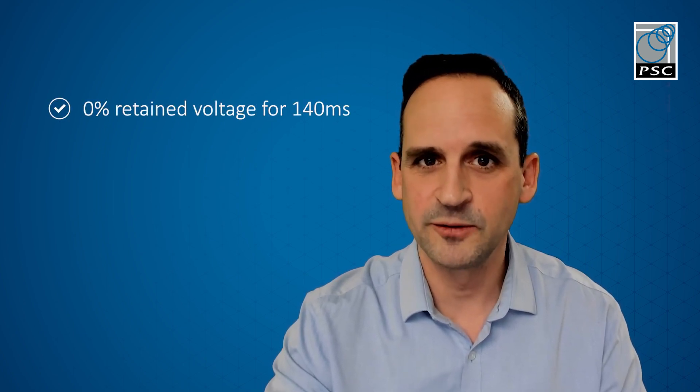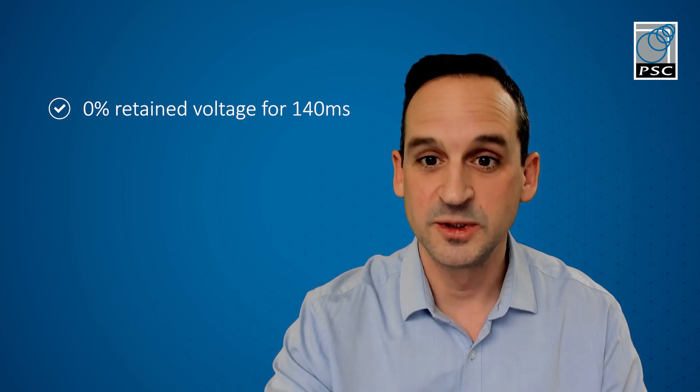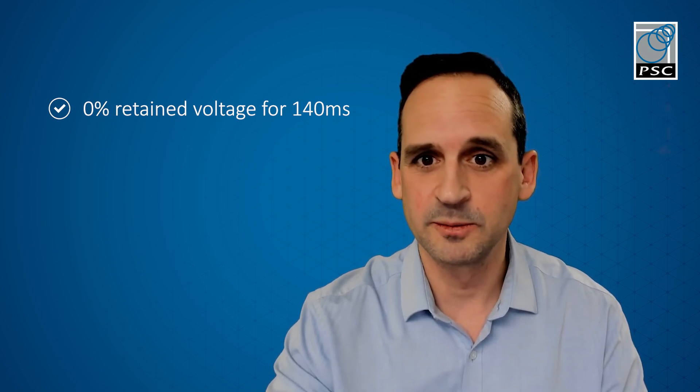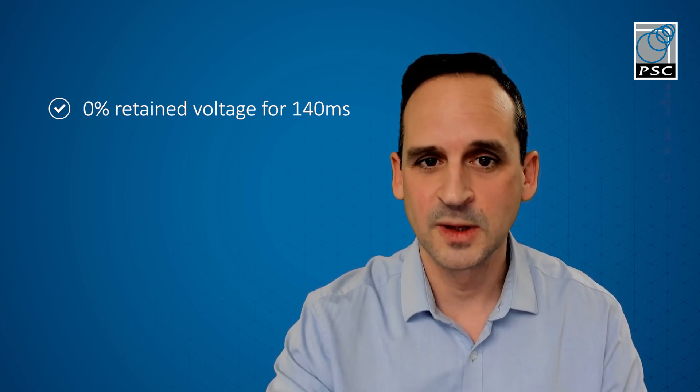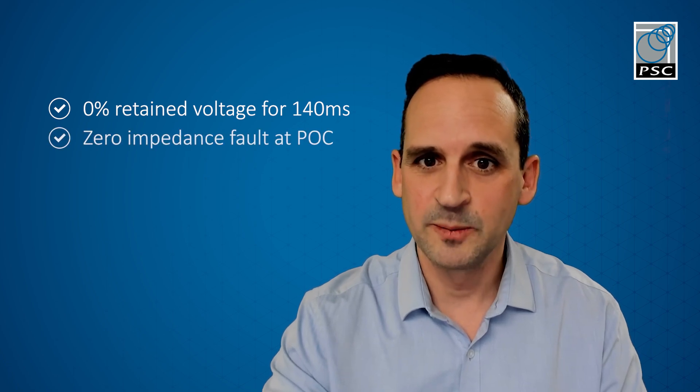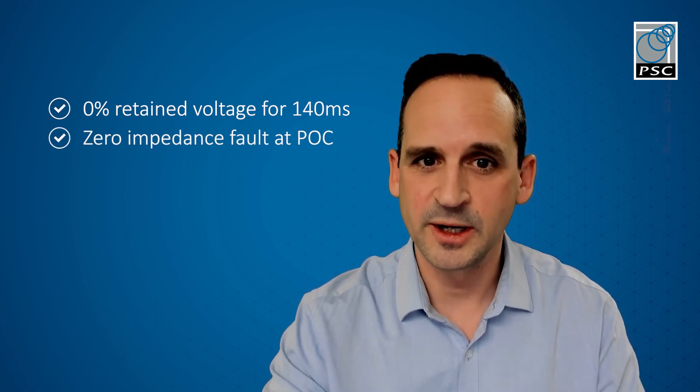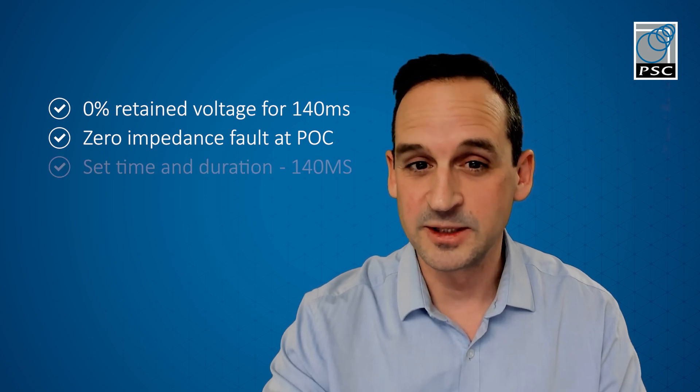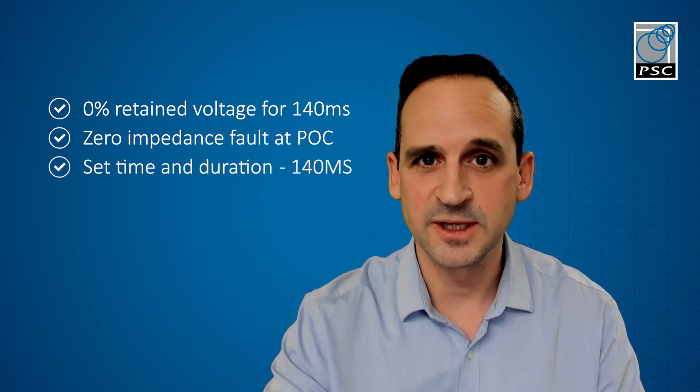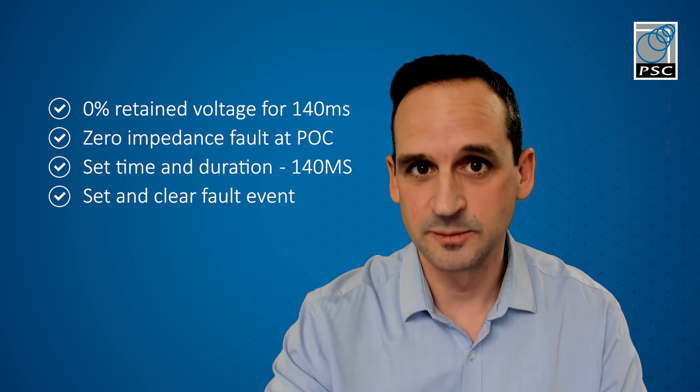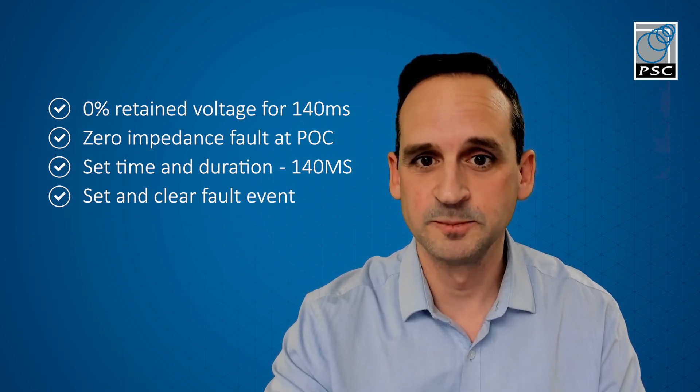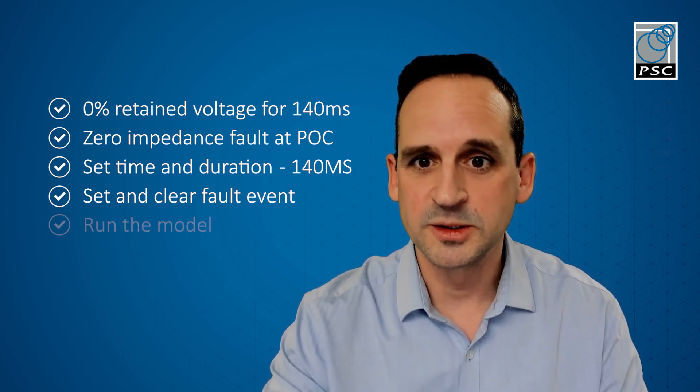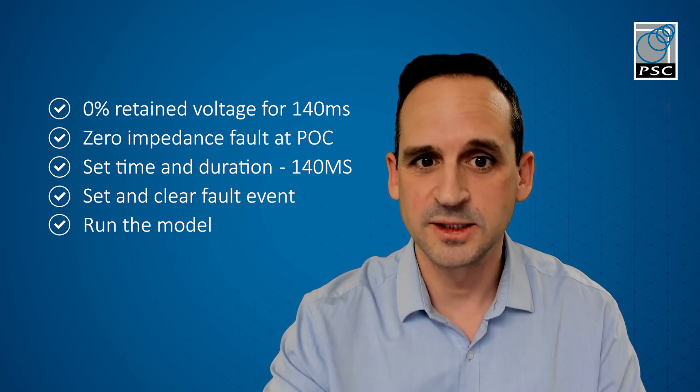For this example, we're going to use this model to demonstrate a voltage drop to 0% retained voltage for 140 milliseconds, just one of the studies that need to be done to meet grid code compliance. This means that a zero impedance fault will be applied at the grid connection point, causing the voltage at that point to drop to zero. This fault will remain there for 140 milliseconds. Then we clear the fault, representing the protection circuit breakers tripping, and continue to run the model up to 10 seconds.